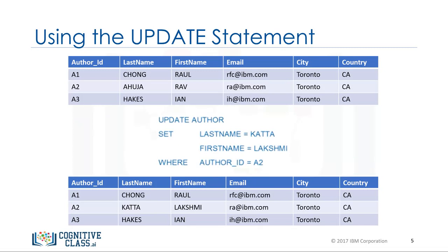In this example, you want to update the FirstName and LastName of the Author with Author_ID A2 from Rav Ahuja to Lakshmi Khata. To see the Update statement in action, we start by selecting all rows from the Author table to see the values. To change the FirstName and LastName to Lakshmi Khata where the Author ID is equal to A2, enter the Update statement as follows: UPDATE Author SET lastName equal to Khata, FirstName equal to Lakshmi, WHERE Author_ID is equal to A2.